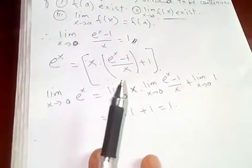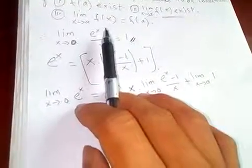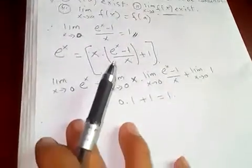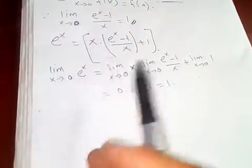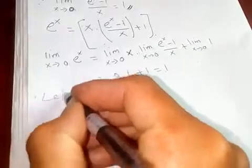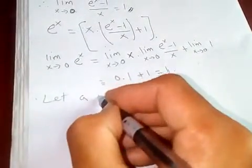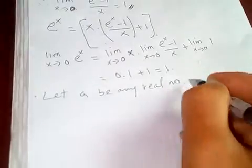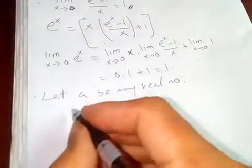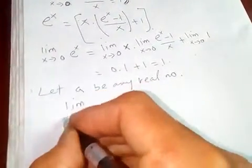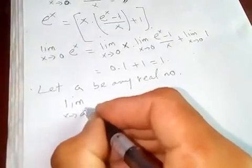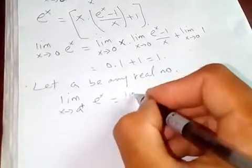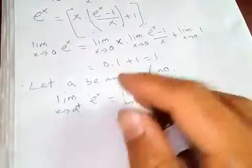Now we are going to find the left-hand limit and right-hand limit. If those two are the same, then the function is continuous. Let a be any real number. Therefore, the limit as x tends to a from the right — the right-hand limit of e to the x — is the limit as h tends to zero.